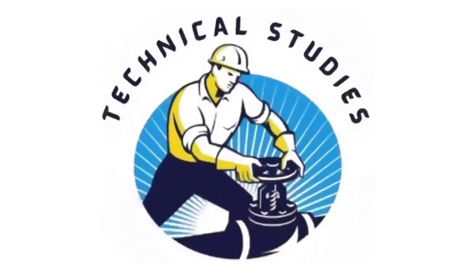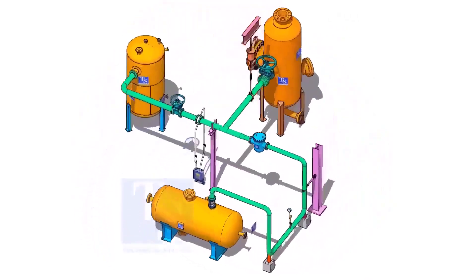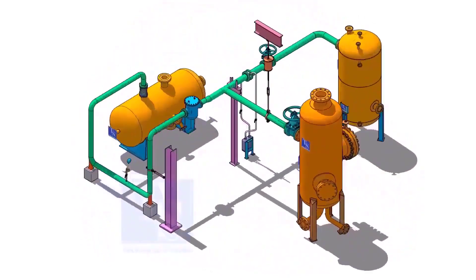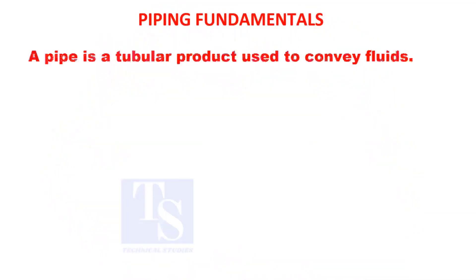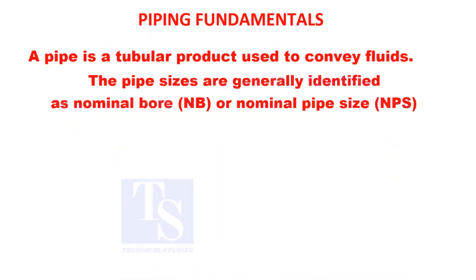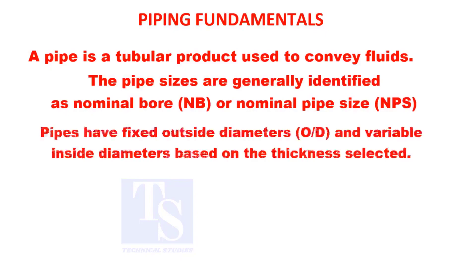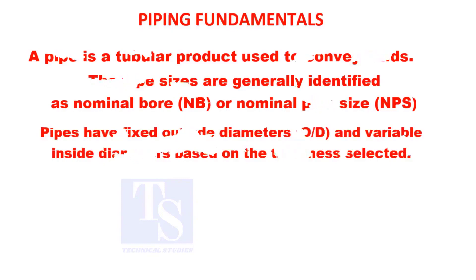Welcome to Technical Studies. In this video, we will discuss the fundamentals of piping. The pipe is a tubular product used to convey fluids. Pipe sizes are generally identified as nominal bore or nominal pipe size. Pipes have fixed outside diameters and variable inside diameters based on the thickness selected.